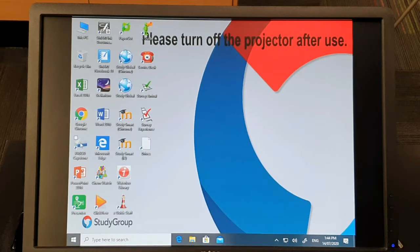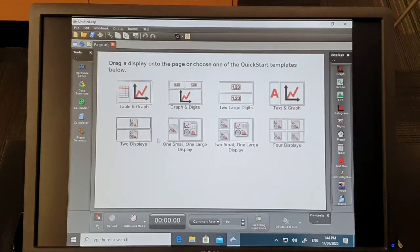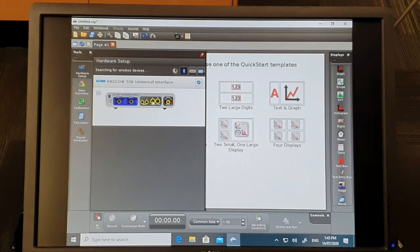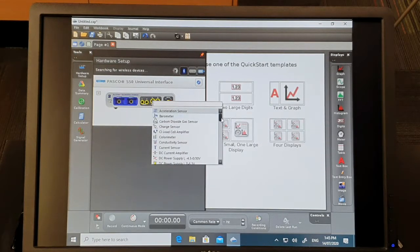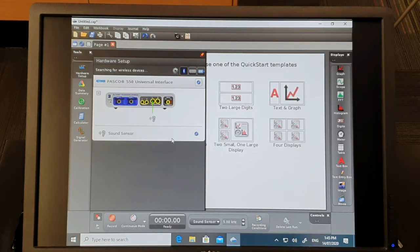I'll open the Pasco software by double clicking. I'll check to make sure that the data logger is on, and then I will tell the computer that the sound sensor is connected to it. I'll do it by clicking Hardware Setup, then moving across here and clicking on the input device here and selecting Sound Sensor. So this green line here is an indication that all is well. I'm going to close this window now.